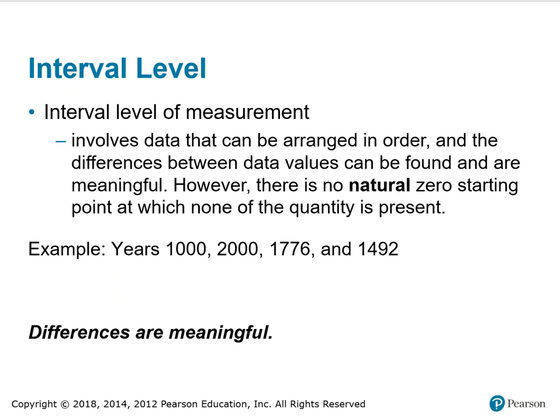Interval level of measurement involves data that can be arranged in order and the differences between data values can be found and are meaningful. However, there is no natural zero starting point at which none of the quantity is present. For example, the calendar years 1000, 2000, 1776, and 1492. Another example is temperature readings such as 100 degrees Fahrenheit. The differences are meaningful.